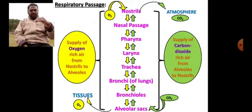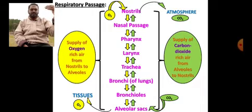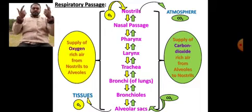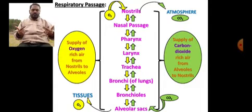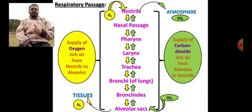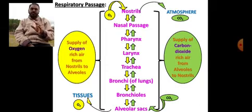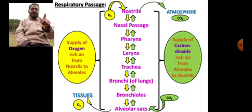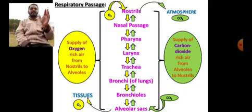When we exhale, it is just the backflow: carbon dioxide is collected from the tissues, taken to alveoli, alveoli to bronchioles, bronchioles to bronchi, bronchi to trachea, trachea to larynx, larynx to pharynx, pharynx to nasal passage, nasal passage to nostrils, then released out into the atmosphere. All these processes take place in fractions of a second — that is the beauty of our respiratory system. This is called the respiratory passage — very important — note it down for examinations.